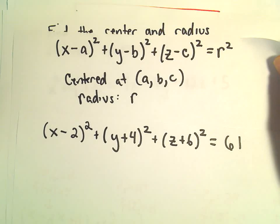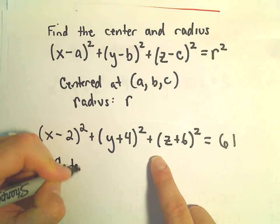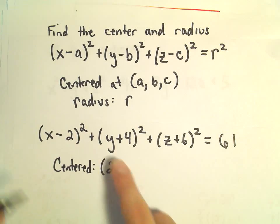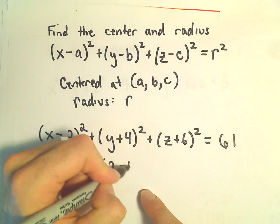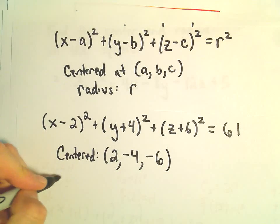Where'd it go? There it is. So now we've taken our equation, we've put it in the nice form. So this is going to be centered at, I see a negative 2, but we use positive 2. I see a positive 4, but we use negative 4 and negative 6. That'll be the center of our sphere.